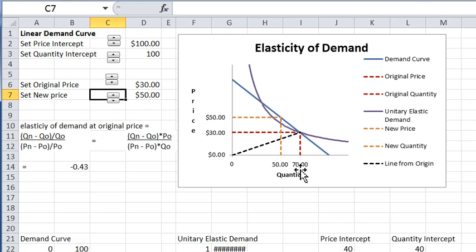So we have a new price at 50 and the old price was at 30, and you can see the resulting quantities as a consequence of that.